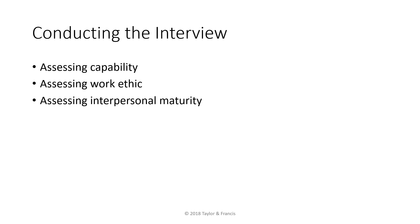When conducting the interview, Emsbury and Paul suggest that interviewers assess applicants based on three basic categories: capability, work ethic, and interpersonal maturity. First, capability is about whether the applicant can do the job. One way to review capability is to consider the applicant's responsibilities at previous or present employment. Interviewers may also consider other work experiences and educational qualifications, especially when those attributes are necessary for the new hire to perform well in the position.